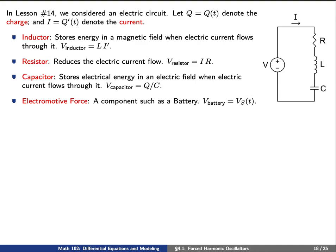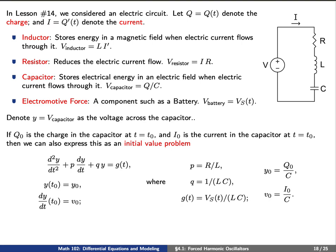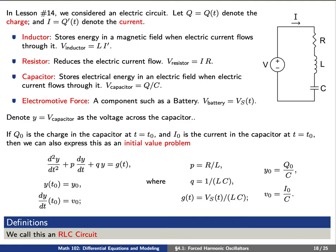Finally, there is an electromotive force, denoted Vs(t) — essentially a battery. Let y be the voltage across the capacitor. If q0 is the charge of the capacitor at time t0 and i0 is the current at time t0, we can express all of this as an initial value problem where p equals R/L, q equals 1/(LC), and g(t) equals Vs(t)/(L*C). Here y0 equals q0/C and v0 equals i0/C. We call this an RLC circuit — R for resistor, L for inductor, and C for capacitance.